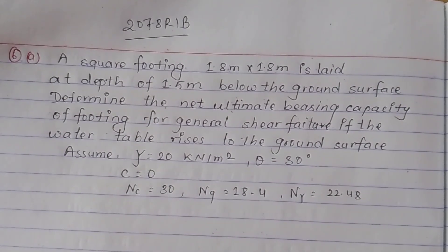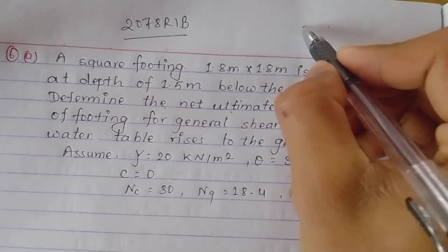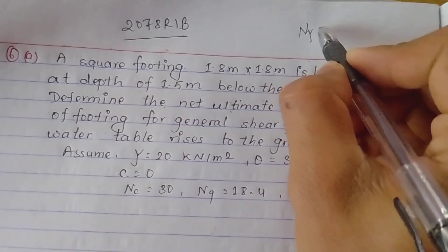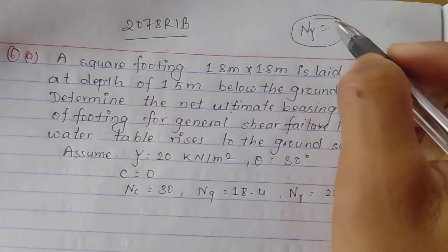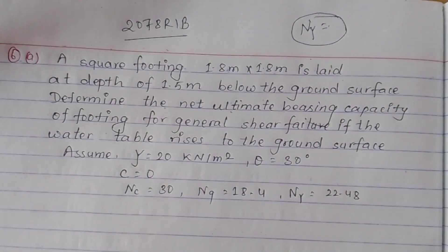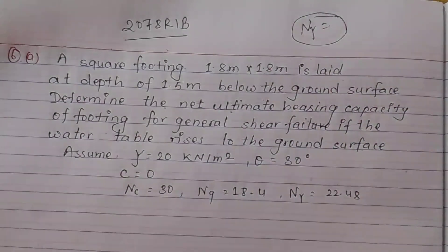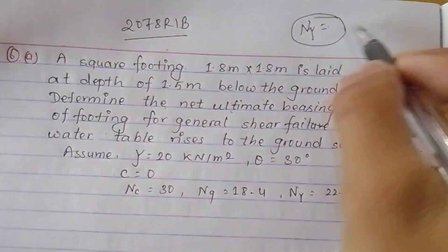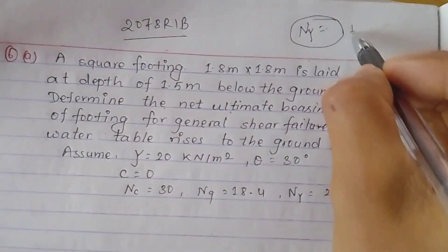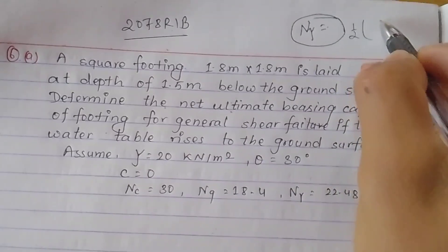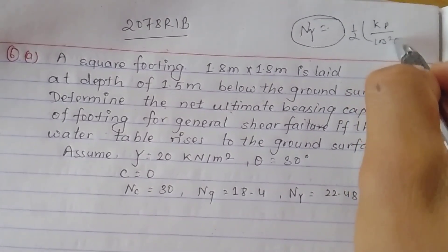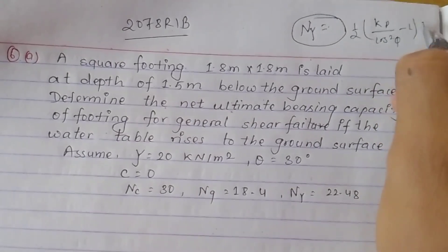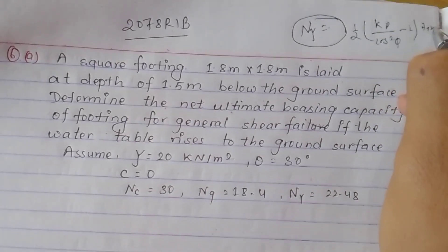If you look into a scale for a single theta, then we are able to give N back — Nγ formula: 1/2 × Kp divided by cos² phi, minus 1, into tan phi.